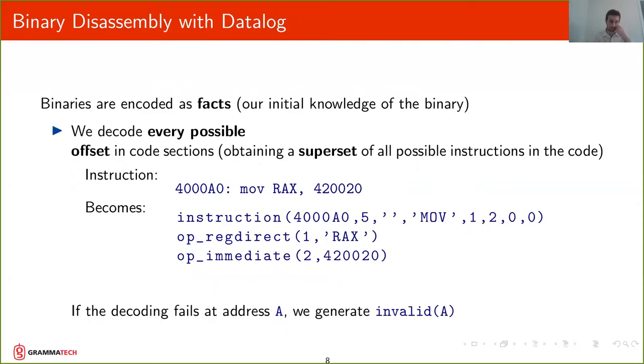and see what instruction might be located there. So if you have an instruction that is a move instruction from an immediate to a register, we will generate the following facts: a fact that says we have an instruction at this address with a size, it's a move instruction and it has these two operands. The first operand is a register, the second operand is immediate.